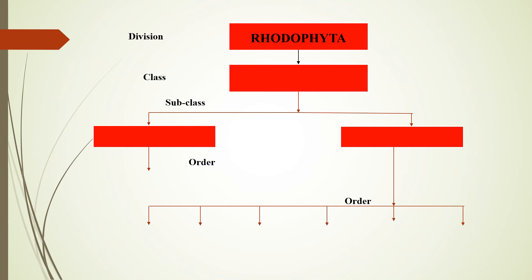Reproduction takes place by all three methods: vegetative, asexual, and sexual. Smith included only one class in Rhodophyta, and that is Rhodophyceae. He then subdivided Rhodophyceae into two sub-classes: Bangioidea and Florideae. In Bangioidea he included only one order, Bangiales, and in Florideae he included six orders.